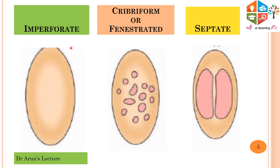Coming to other types of hymen — the imperforate type of hymen. Here there is no obvious central opening. At the onset of the menstrual cycle, doctors need to make a surgical incision or create a surgical opening to let out the menstrual fluid, menstrual blood, as well as other fluids. If left unattended, a female will have sudden abdominal pain and other complications as a result of collection of menstrual fluid within the body cavity.